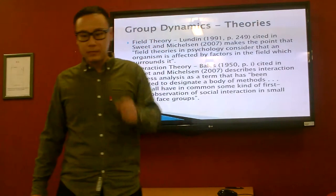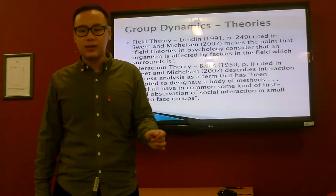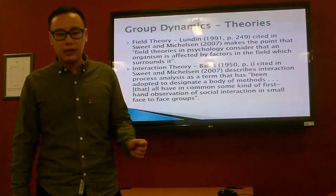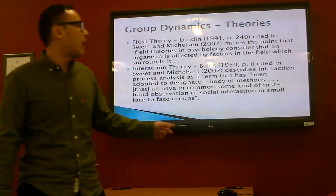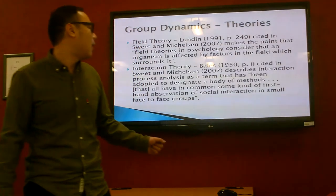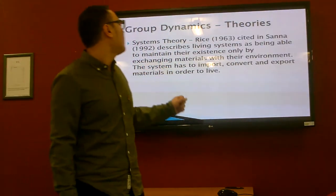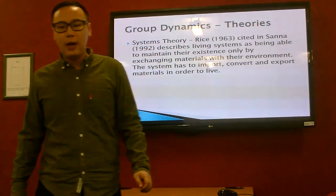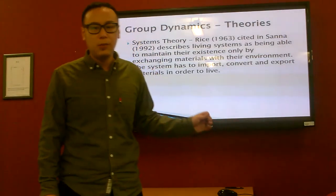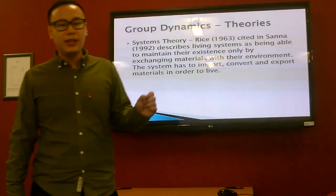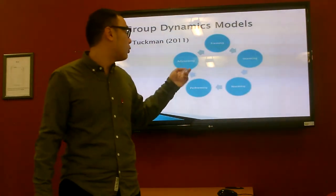Interaction Theory: Sweden and Matheson describe Interaction Process Analysis as a term that has been adopted to describe a body of methods, all having in common some kind of first-hand observation of social interaction in small face-to-face groups. Systems Theory: Rates and Sana describe living systems as being able to maintain their existence only by exchanging material with their environment. The system has to importantly import and convert material in order to survive. This is an organismic model.